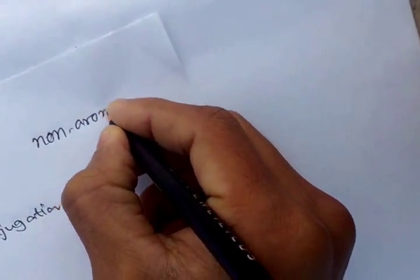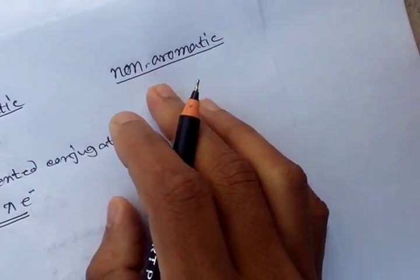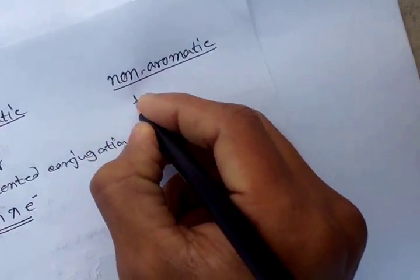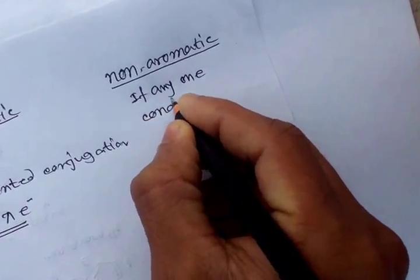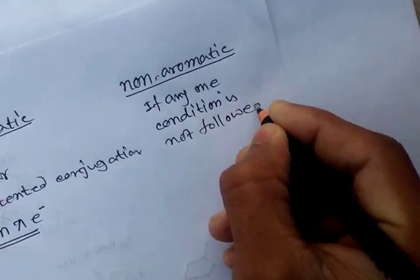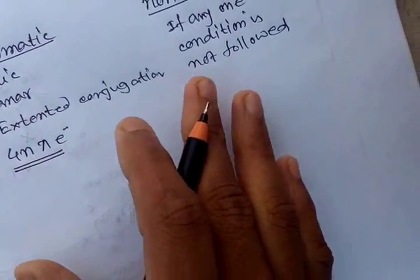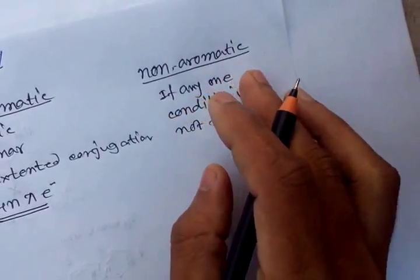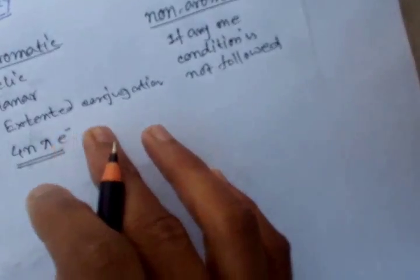A compound is non-aromatic if it does not follow any of the criteria. If any one condition is not fulfilled, the compound is called non-aromatic — specifically if it is not cyclic, not planar, and has no extended conjugation.